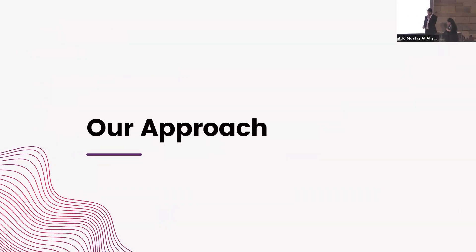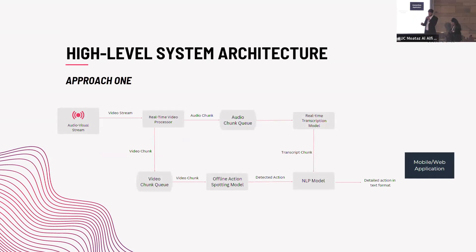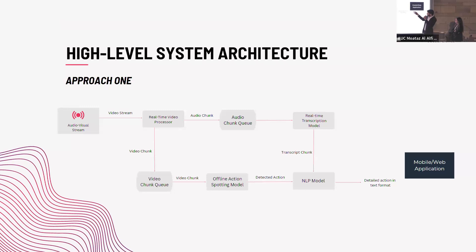Now let's talk about our approach to making this product come to life. This is our initial architecture. It starts with the audio-visual stream, which is basically just a live football match. The video stream goes through a real-time video processor that extracts audio chunks and video chunks respectively. The video chunk goes through an offline action-spotting model which outputs the detected action, and the audio chunk goes through a transcription model — basically the English commentary of the match. The transcript chunk, along with the detected action, both go through a natural language processing model, which outputs the detailed action in text format. This is then sent to the front-end or mobile or web application through our API.